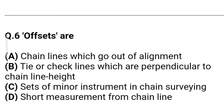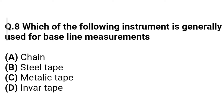Question 5: Offsets are — Option A: chain lines which go out of alignment. Option B: tie or check lines which are perpendicular to chain line. Option C: sets of mirror instruments in chain surveying. Option D: short measurements from the chain line. The correct answer is Option D — short measurement from the chain line.